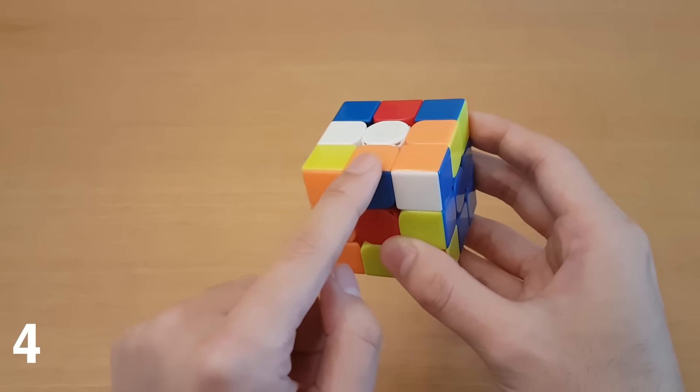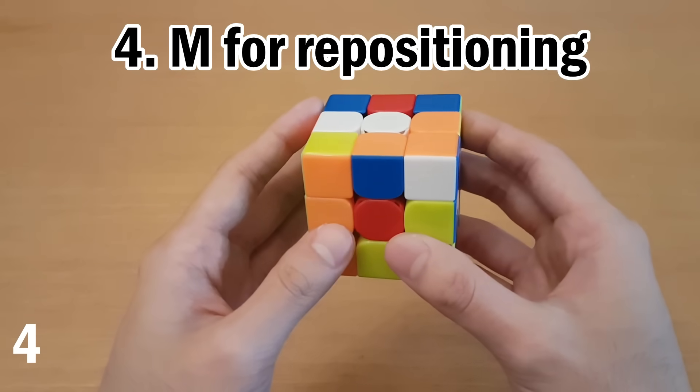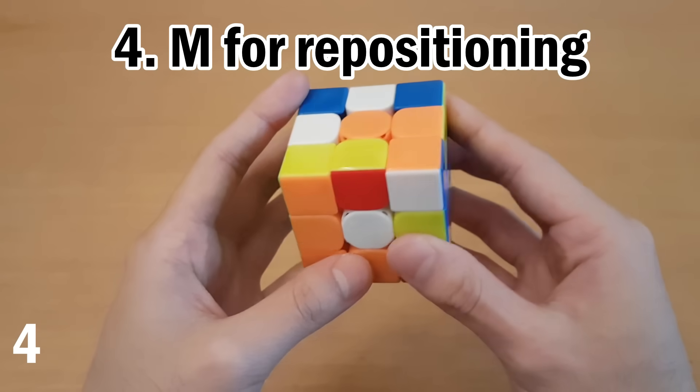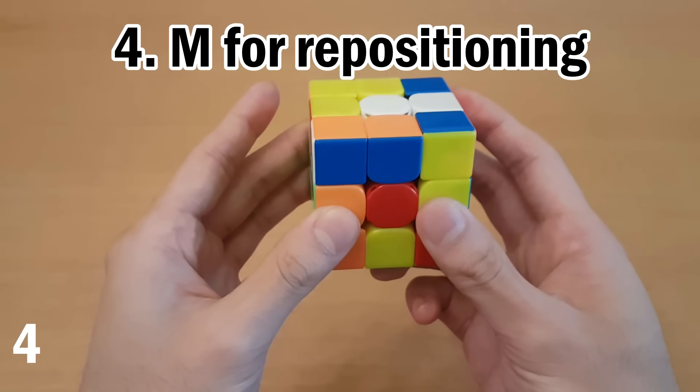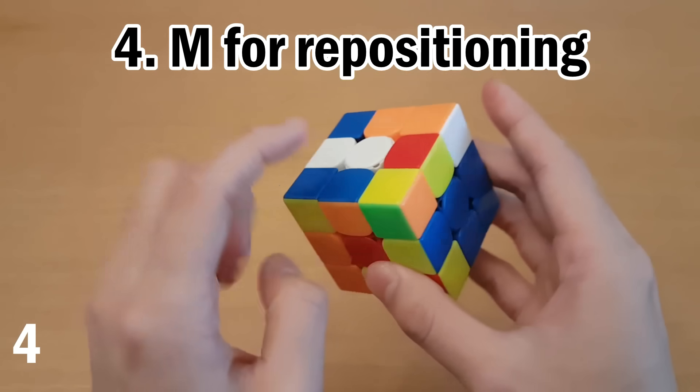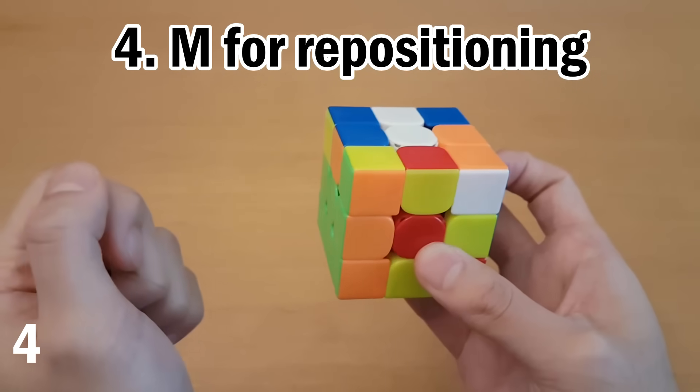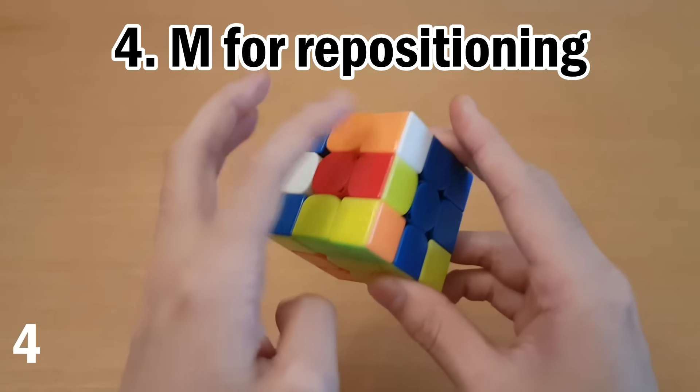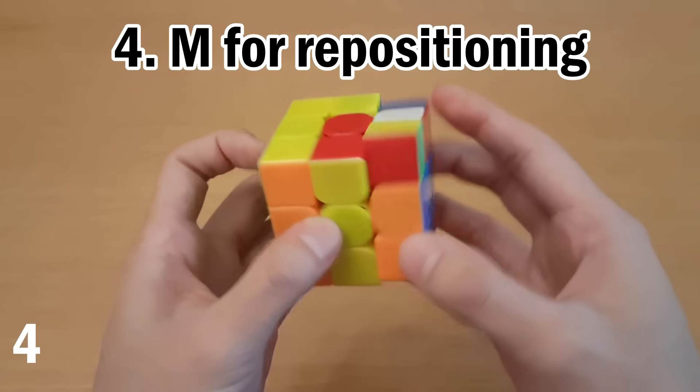Now, there are cases where the edge is in the top layer where you can use the M slice to your benefit. So in this specific case, we can take this edge away and then move the corner and just move it back up, and that immediately pairs them. Or for this case, when it seems like you'll have to rotate if you're doing CFOP, you just have to do M prime to push them together, and then you can just insert.